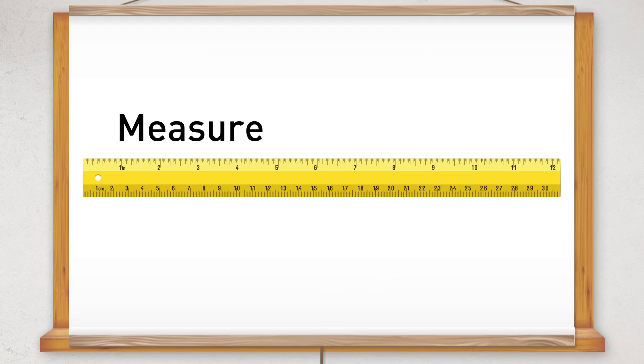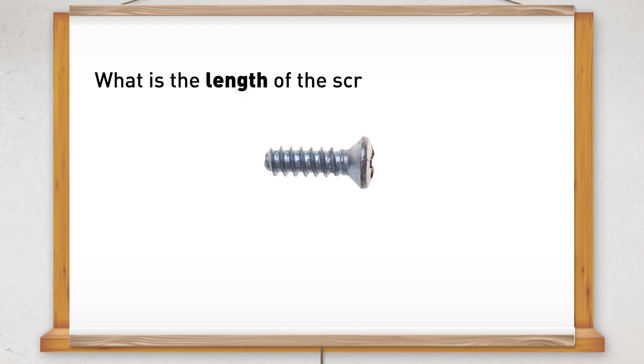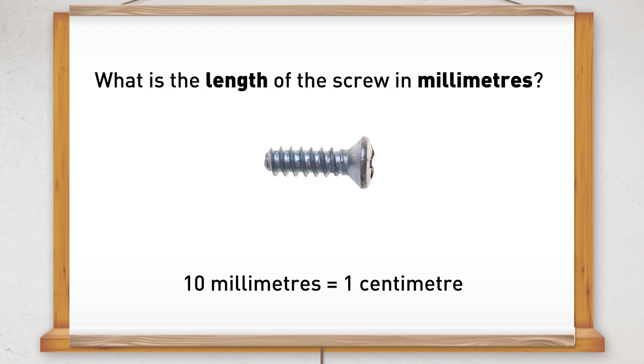We use a ruler to measure small lengths. What is the length of a screw in millimeters? Remember there are 10 millimeters in one centimeter. So the length of the screw will be 10, 20, 30 millimeters.